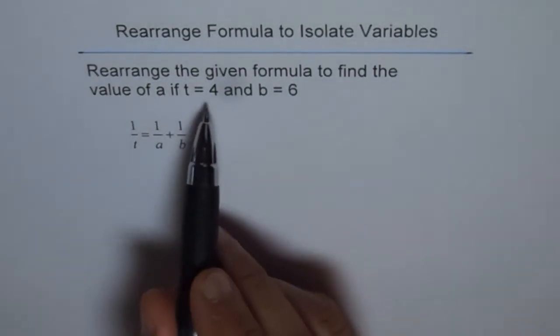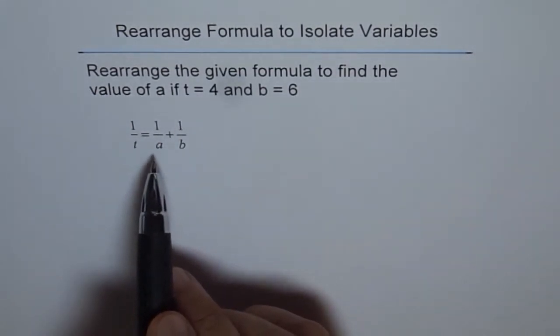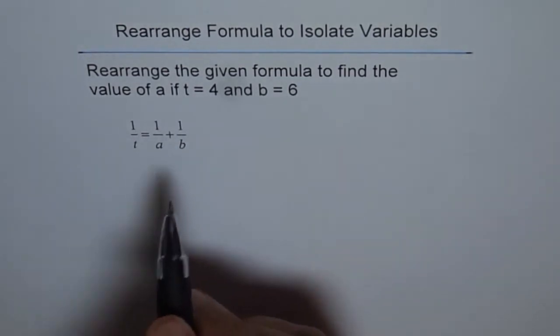So here what we need to do is substitute 4 for T and 6 for B, and then find what A is. Let's do that part first.